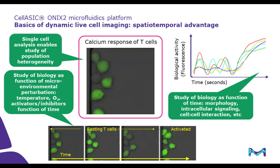In summary, dynamic live cell imaging offers analysis of subcellular events at single-cell level, enabling study of population heterogeneity and study of cellular biology as a function of microenvironmental perturbation. For example, we can study the calcium responses of T-cells before, during, and after their activation, while controlling when and how T-cell agonists — in this case ionomycin — are introduced. Other common examples include dynamic gas control to create normoxic and hypoxic conditions. The time dimension allows us to study cellular responses such as morphology, velocity, signaling, and cell-cell interaction as a function of time to obtain true spatiotemporal information.